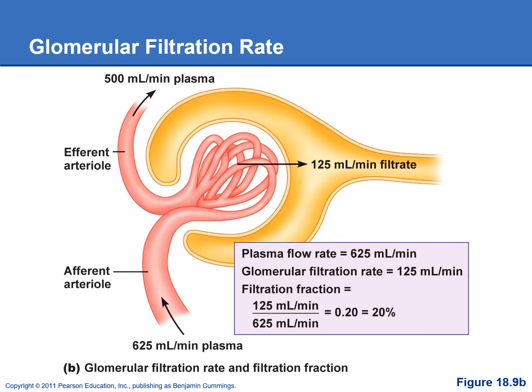To illustrate the glomerular filtration rate: plasma flows into the glomeruli at 625 mL per minute, but we're only filtering out 125 mL of that plasma per minute to make our filtrate. Dividing 125 by 625 gives us that 20% of plasma that's filtered — we're not taking out 100% because that would leave just cells in a sludge.